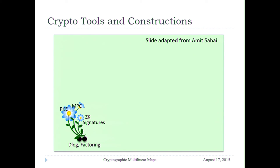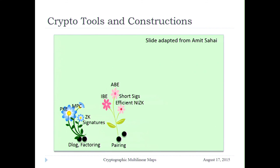This slide was adapted from a presentation by Amit. In the beginning, God created the heavens and the earth and gave us discrete log and factoring. And the land was plentiful — we had nice flowers growing. We were able to do public encryption and signatures, and even more: zero knowledge, multiparty computation, and things like that. And later, with the pairing revolution of the early 2000s, many more beautiful flowers came that we didn't know how to do before, like identity-based encryption, short signatures, efficient non-interactive zero knowledge, and attribute-based encryption for simple functions.